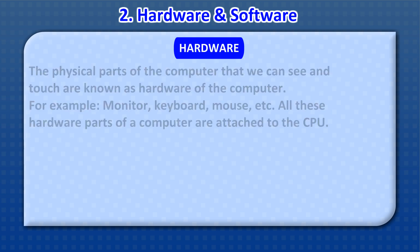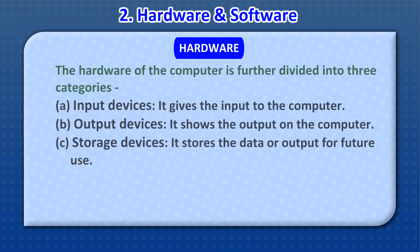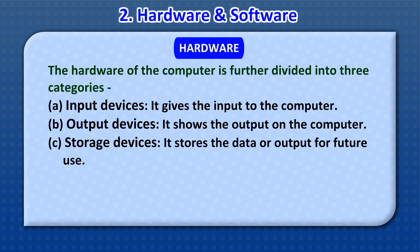Hardware: The physical parts of the computer that we can see and touch are known as hardware of the computer. For example, monitor, keyboard, mouse, etc. All these hardware parts of the computer are attached to the CPU.